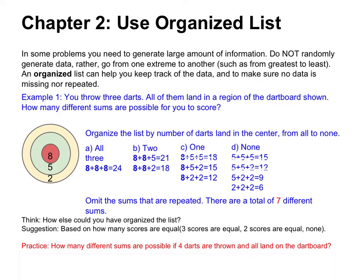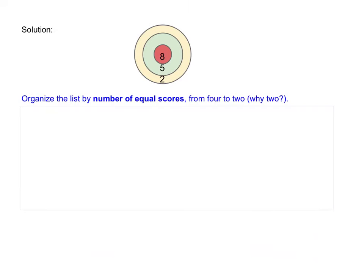Here's a practice problem: how many different sums are possible if four darts are thrown and all land on the dartboard? Pause the video now and when you are ready, move on. Here's one possible solution. This time I'm going to organize the list by number of equal scores instead of number of darts that land in the best region, just to show you something different.